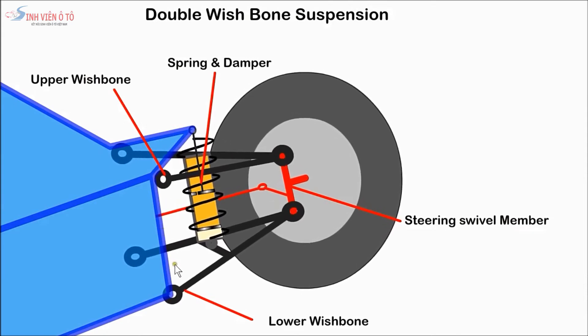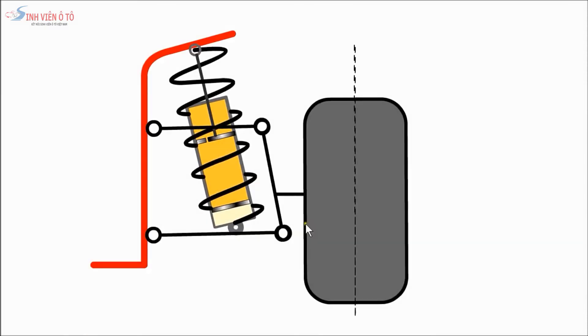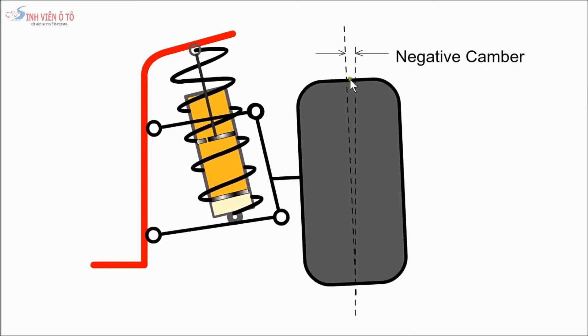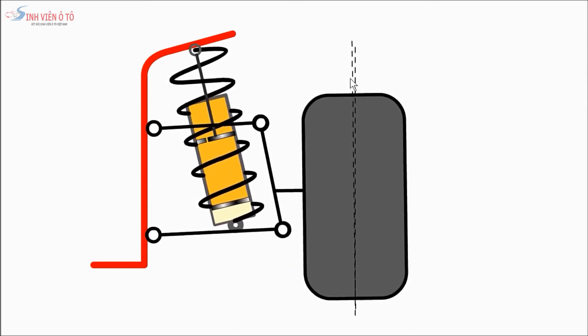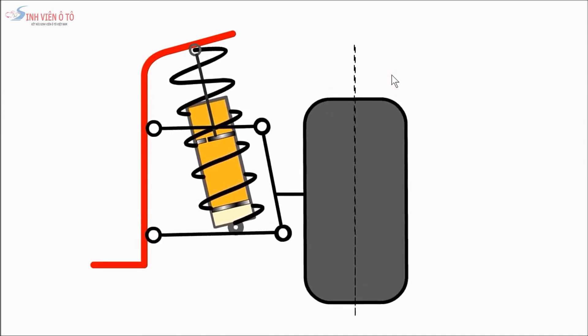This system is expensive to manufacture but gives good stability to the wheel. They are often used in racing cars. The wishbones can be designed to alter the camber of the wheel as the suspension is deflected. Negative camber provides better stability as the car corners.